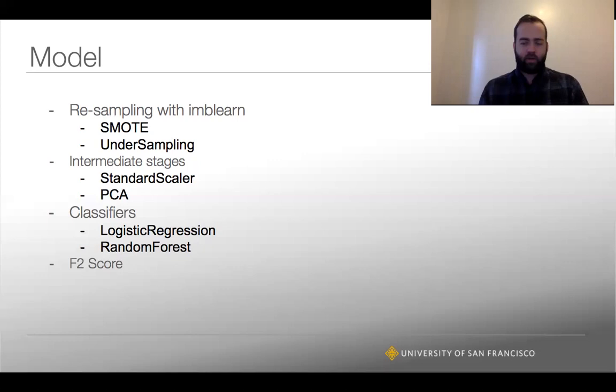The intermediate stages are for logistic regression where you do that standard scalar to normalize. It gets rid of that right tail, or really squashes it down and pushes it more towards the normal. And then PCA.